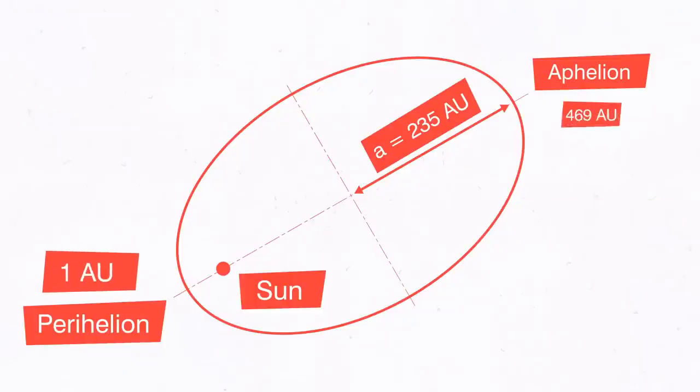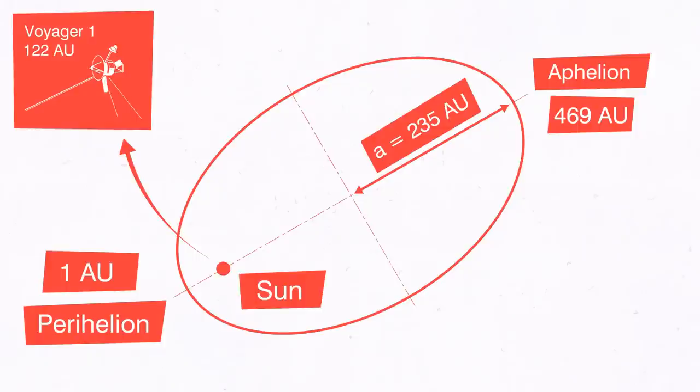Just to compare this value, Voyager 1 currently transits the heliosheath, the outermost layer of the heliosphere, at the distance of 122 astronomical units from the Sun. Obeying the geometry of ellipses, I can now determine the orbit.